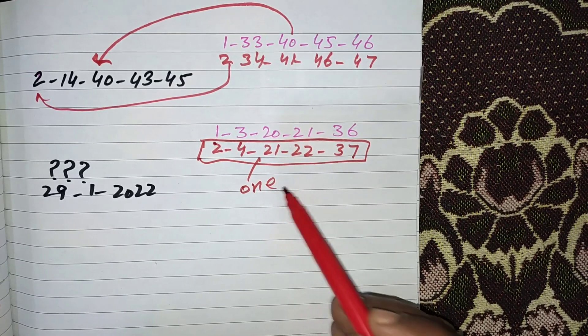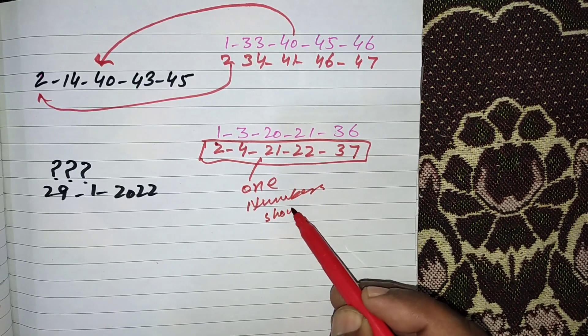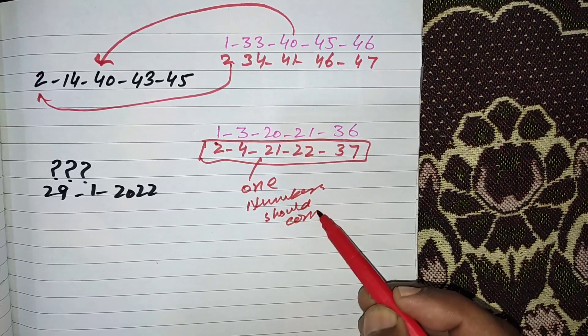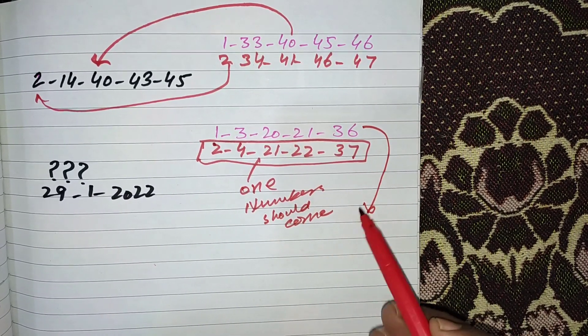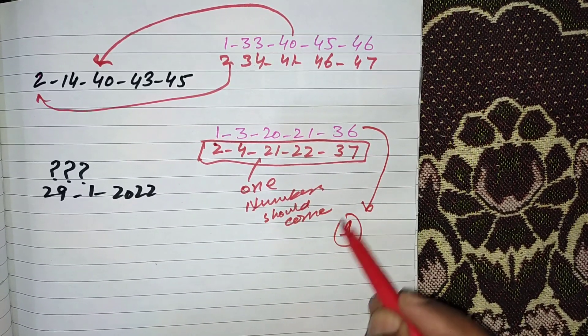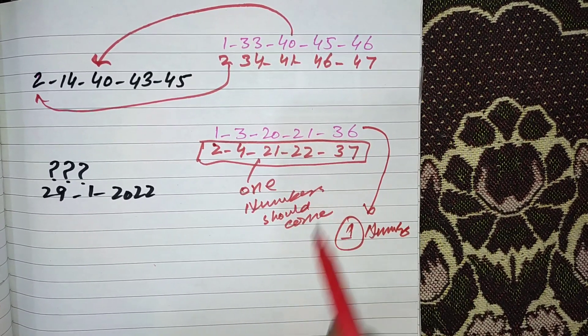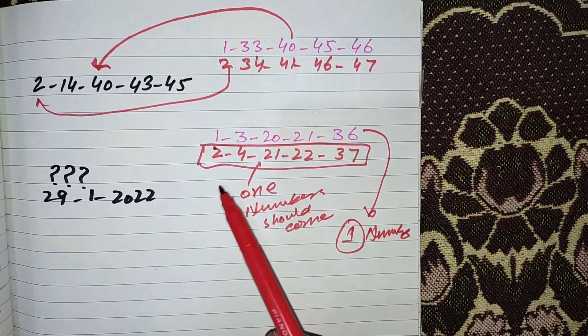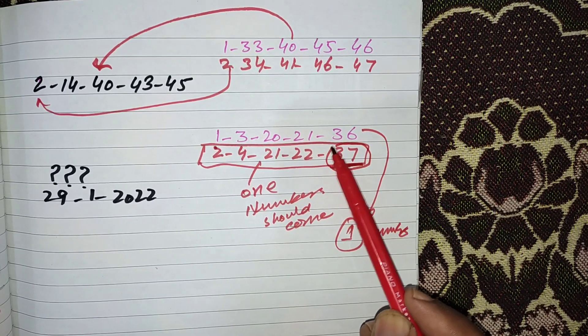One number should come from these numbers and one number should come from these numbers. One most important point is you can see here the last pair is 37.